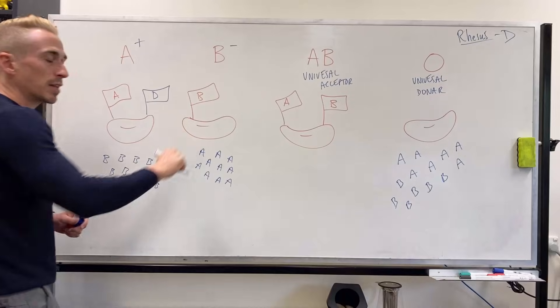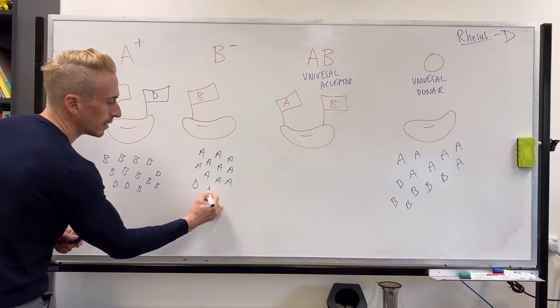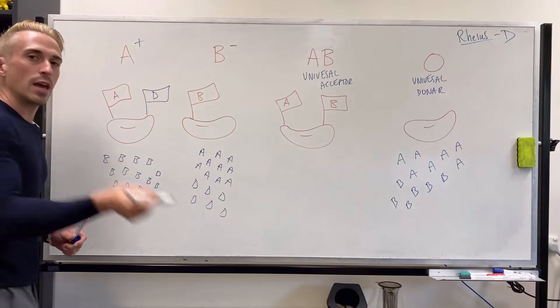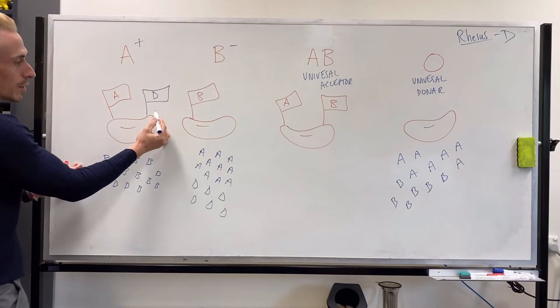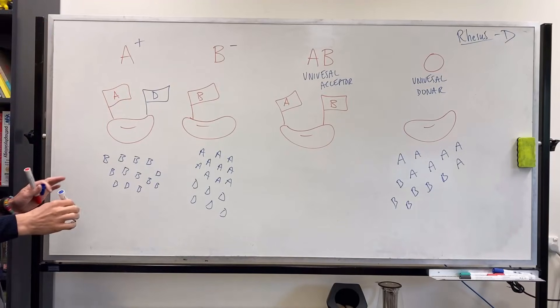But what it also means is it adds another level of complexity. If you're B negative and you don't have the D flag, you're also going to create an army against D, which means all blood types that are negative cannot receive positive blood, but blood types that are positive can receive negative blood.